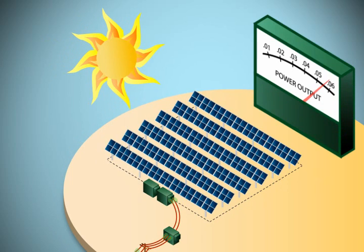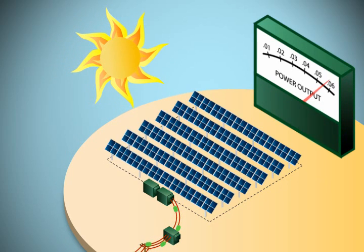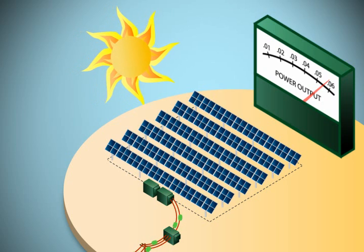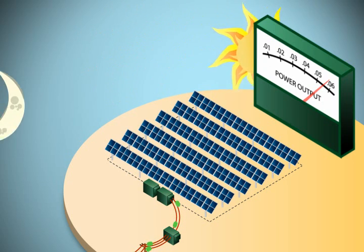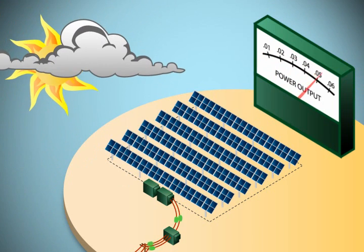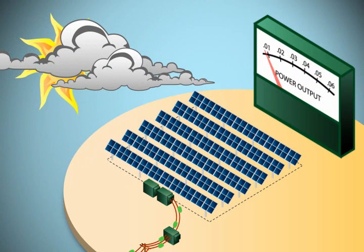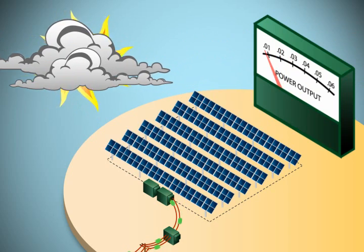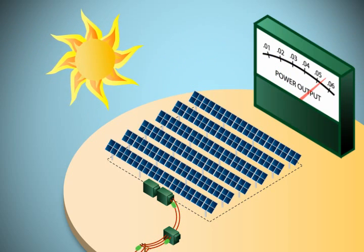Although renewable generation, such as solar, is a good resource, it has limitations. Solar photovoltaics only generate electricity when the sun is shining. When day turns to night, no electricity is generated. Even during the day, when the sun is obscured by clouds, the amount of electricity generated can quickly drop. These rapid changes in output can cause power quality problems on the grid.